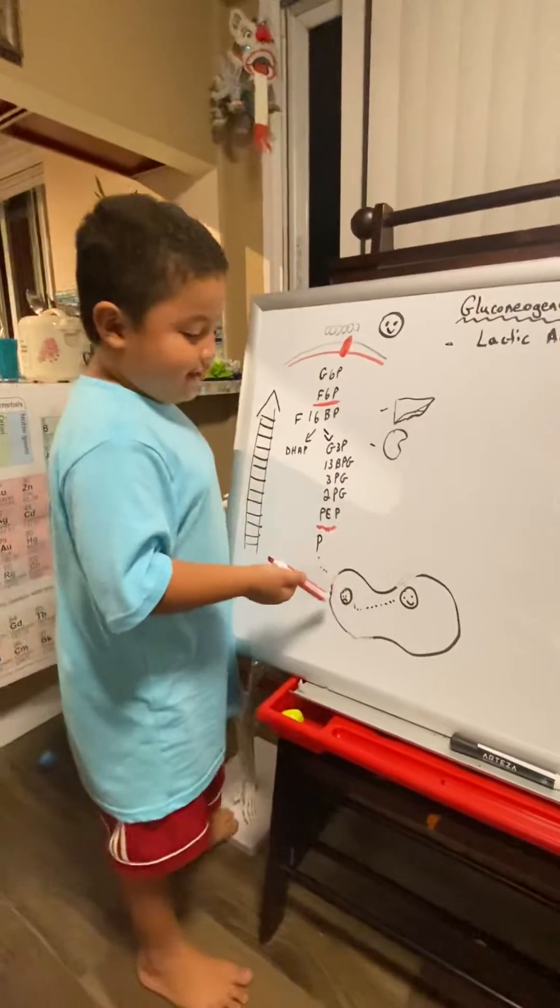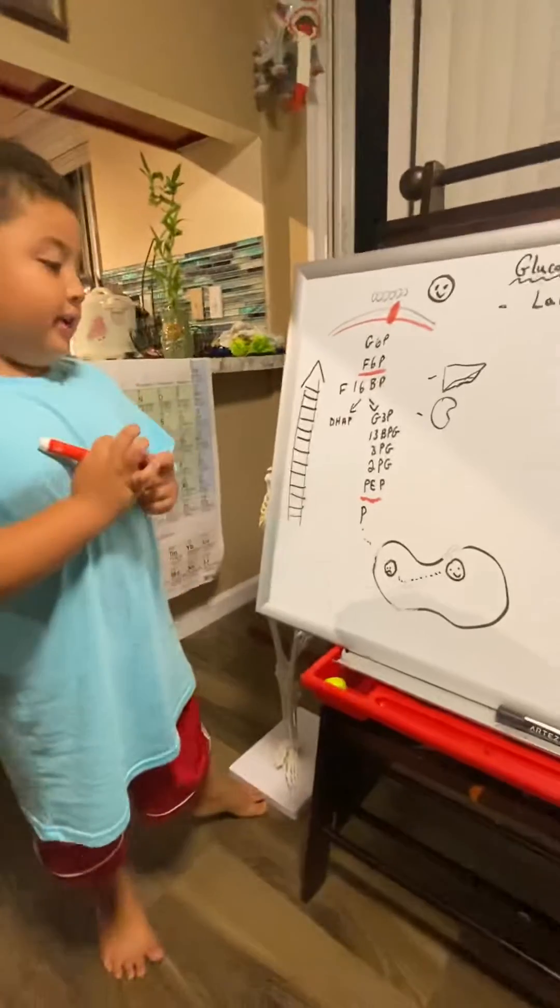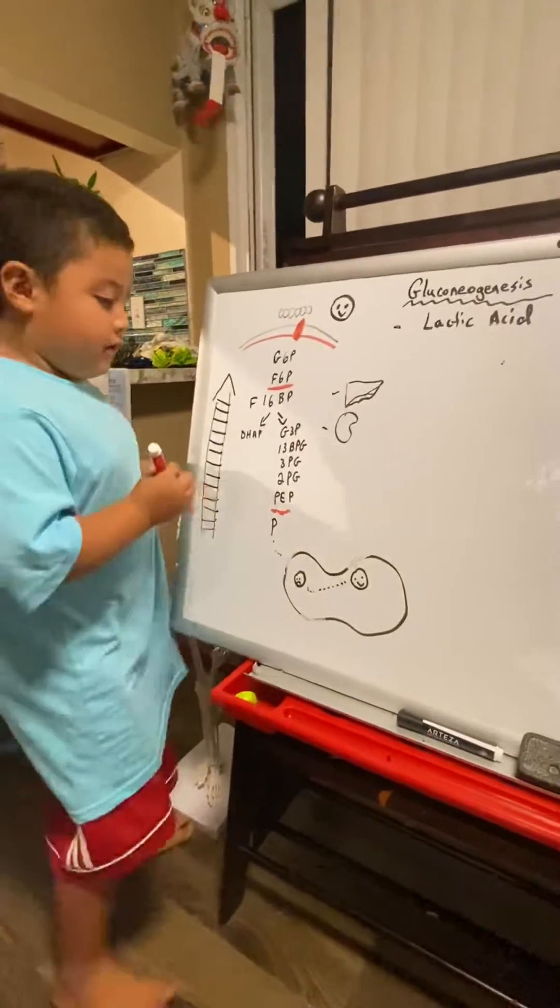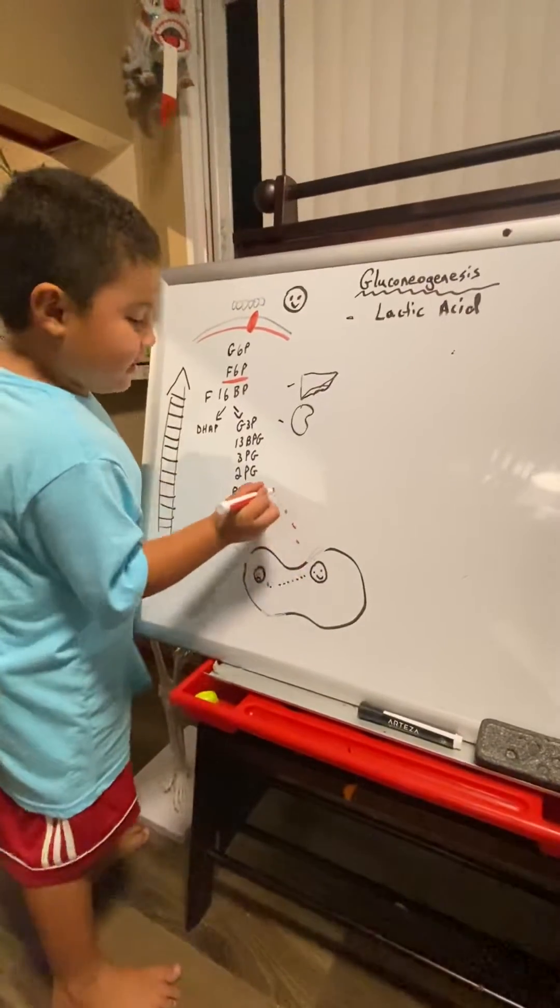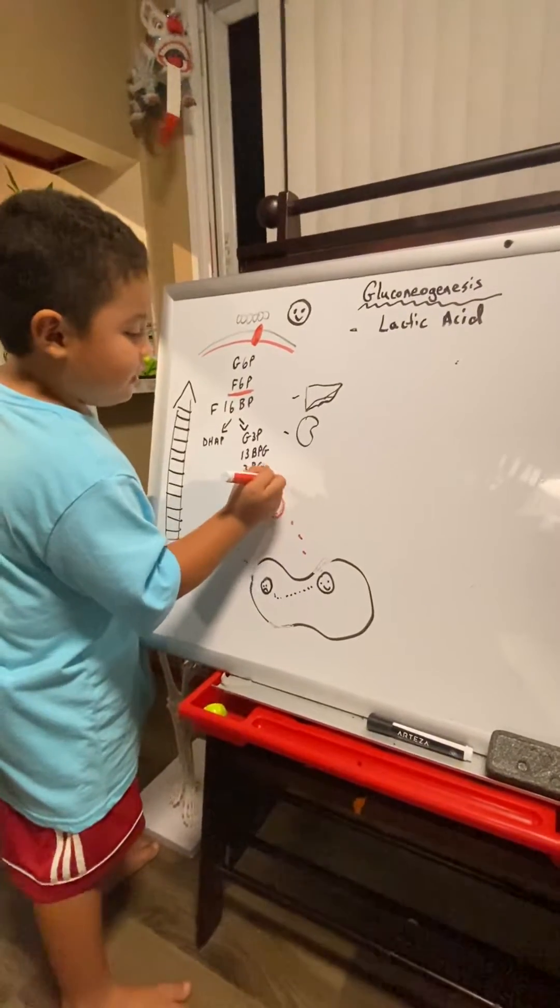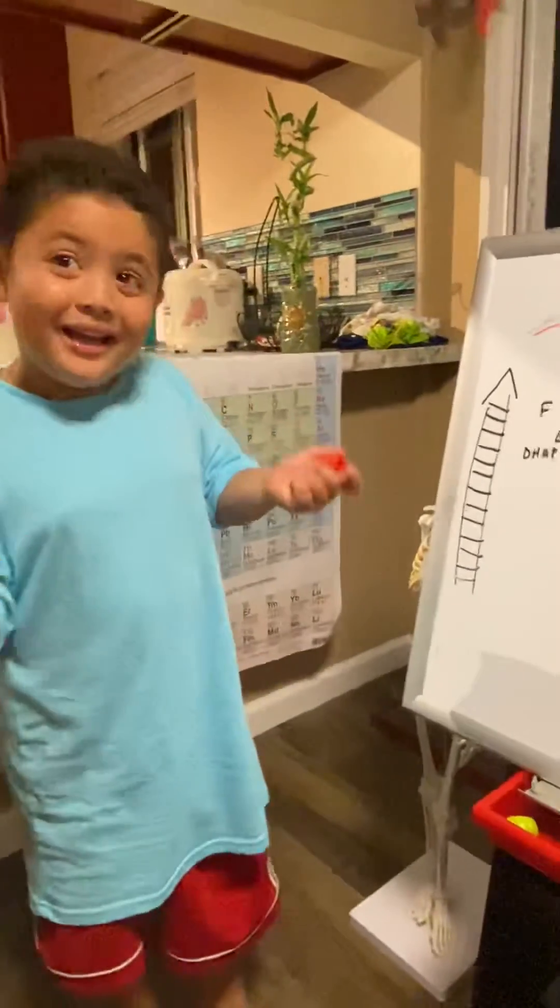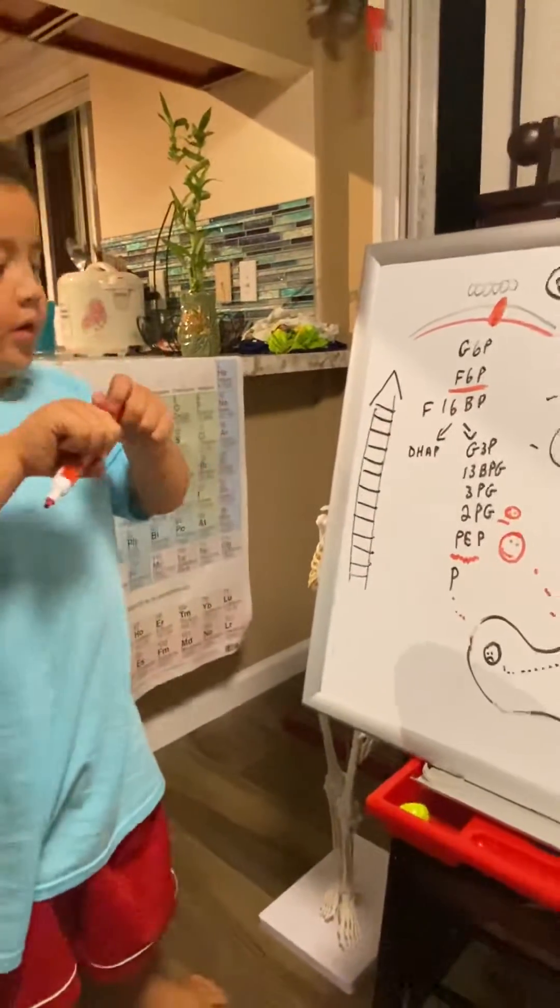But he needs to go to malate and he becomes malate. And then he goes up and he comes outside. And here's malate, and it comes back to oxaloacetate. Yay! Now it becomes phosphoenolpyruvate.